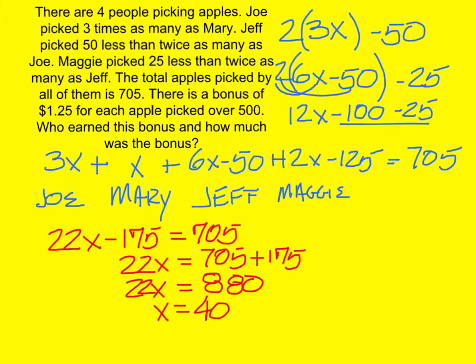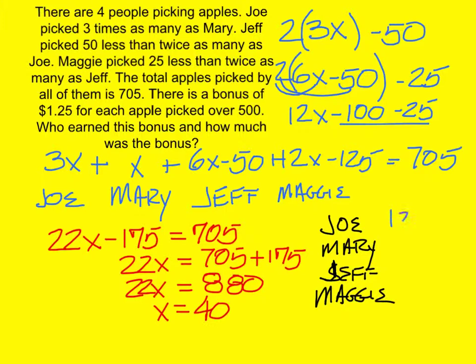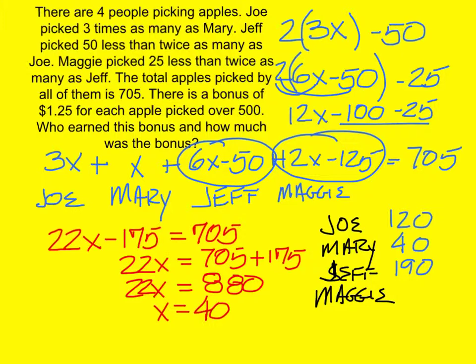Okay, so with that, we have Joe, Mary, and Jeff. That's a weird looking J. And there we go. And then Maggie. Alright, so for Joe, Joe is 3X, so he's 120. And Mary is X, she's 40. Jeff is 6X minus 50, so 40 times 6 is 240, minus 50 is 190. And Maggie is 12X minus 125. 12 times 40 is 480, minus 125 is 355.